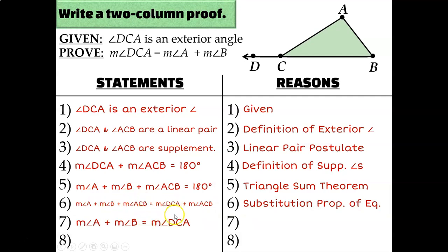is equal to the measure of angle DCA, ACB goes away. That was the subtraction property of equality. But that's not quite exactly what I was asked to write. I'll switch that around using the symmetric property.